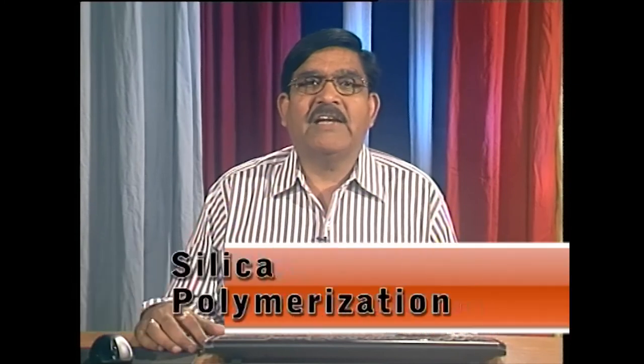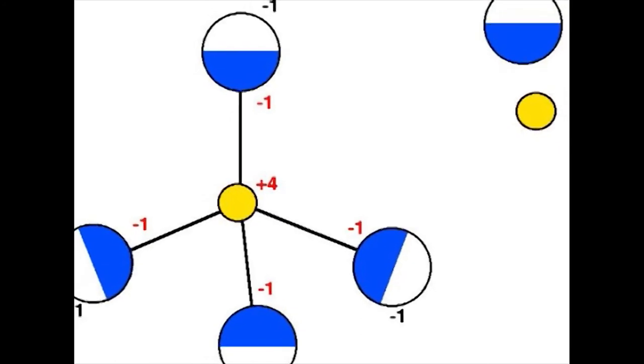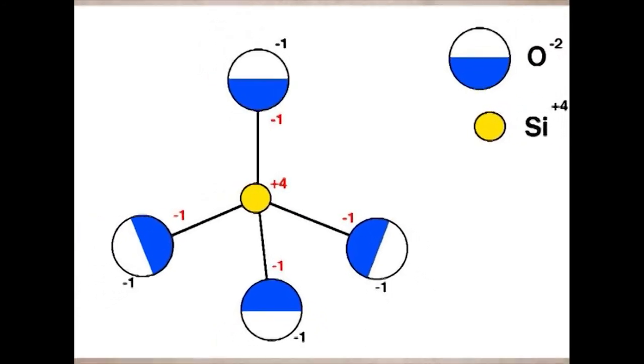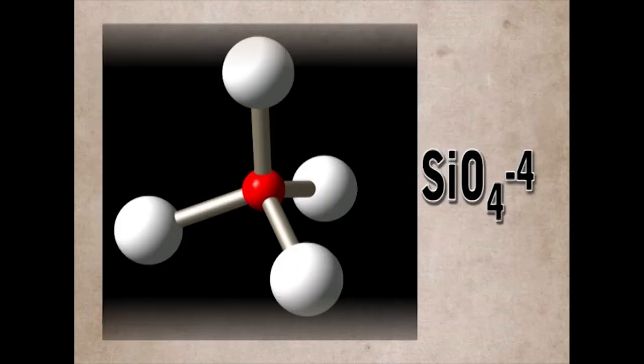The silicate minerals form a group of inorganic compounds of great chemical as well as structural complexity, very important for rock-forming minerals and also for understanding magma crystallization. The one common component of all silicates is the tetrahedral SiO4 minus 4 structure subunit.